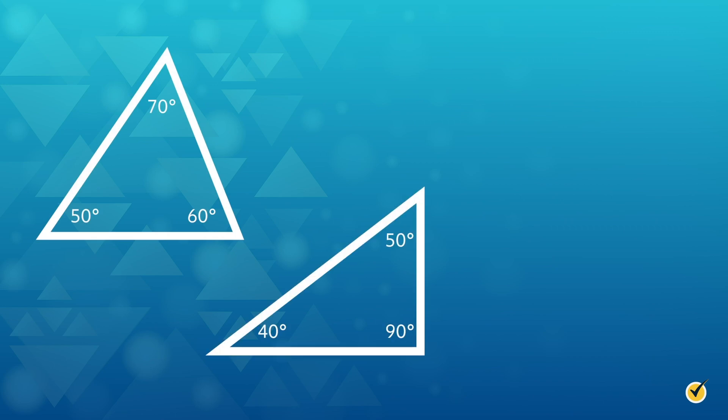We're going to break our six types of triangles into two groups of three. Let's start with the three types of triangles that are categorized by the measure of their largest angle. These are the acute, right, and obtuse triangles.